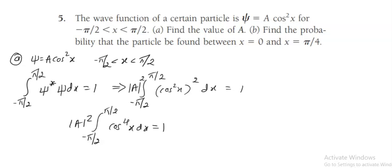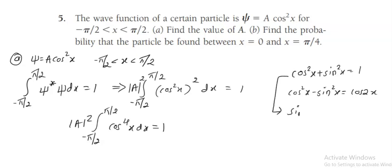We have to find the integration of cos to the power 4x, so we can use the trigonometric identity. We know that cos squared x plus sin squared x equals 1, and cos squared x minus sin squared x equals cos 2x. Let us solve for cos squared x. From this, sin squared x equals 1 minus cos squared x.